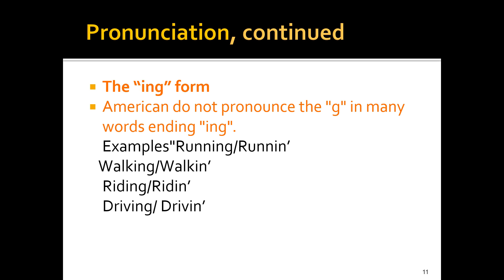The -ING form. Americans do not pronounce the G in many words ending in -ING. For example, 'running' — as I said, I was from New Jersey and I said 'runnin,' not pronouncing the G. But Britishers say 'running' clearly. 'Walking' — Britishers say 'walking' and Americans say 'walkin.' You must have heard this in many Hollywood movies — 'walkin,' 'runnin.' 'Riding' — Britishers pronounce it as 'riding' and Americans say 'ridin.'